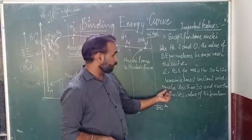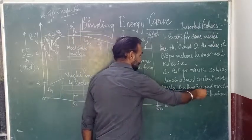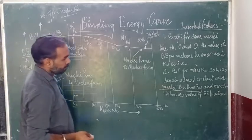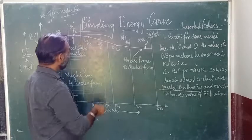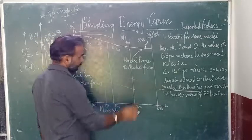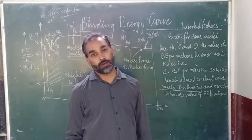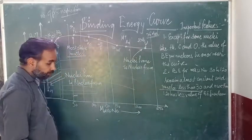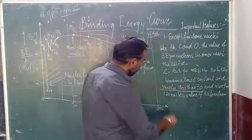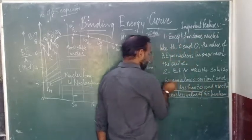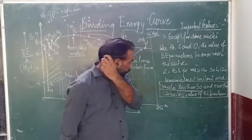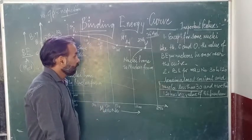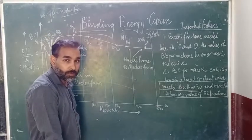Another feature: nuclei with mass number less than 30 and more than 120 have a lower value of binding energy per nucleon. These are basic features of this Binding Energy Curve. Because of this — that nuclei less than 30 and more than 120 have less binding energy per nucleon — the binding energy per nucleon curve also describes the nucleus's tendency for fission and fusion reactions.